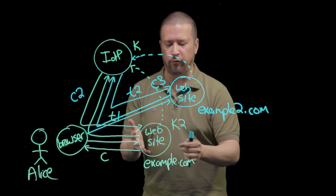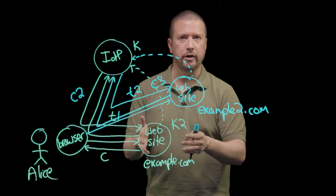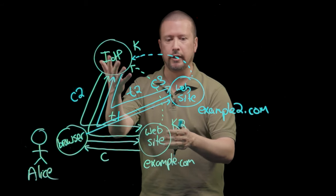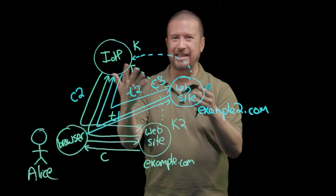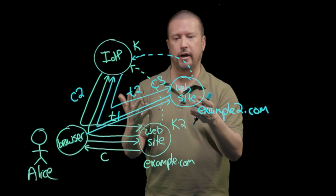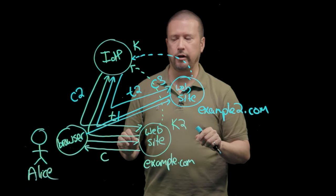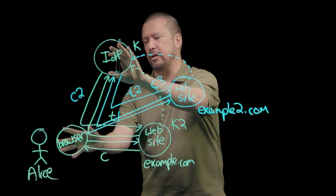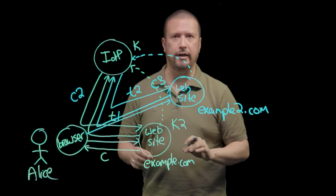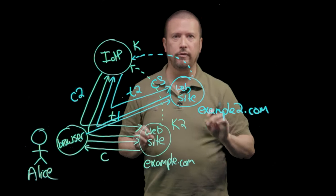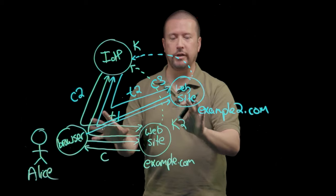Furthermore, it's even possible for example.com to use one protocol to authenticate to the IDP, say SAML, and for example2 to use a different protocol to authenticate with the IDP, like OpenID Connect, and everything will still be single sign-on because of the session that Alice's browser has with the IDP. That's the secret to being able to have the IDP do all of these different interactions and send all these different tokens.